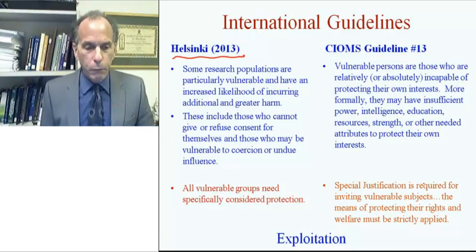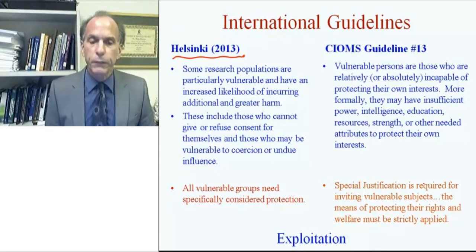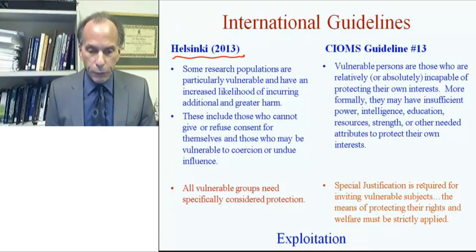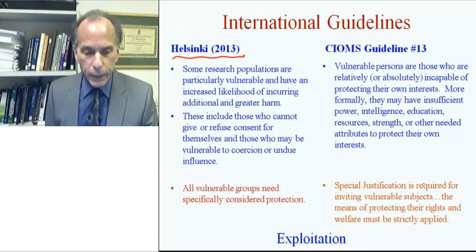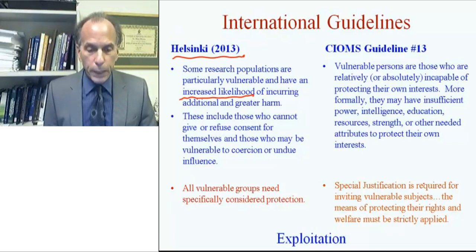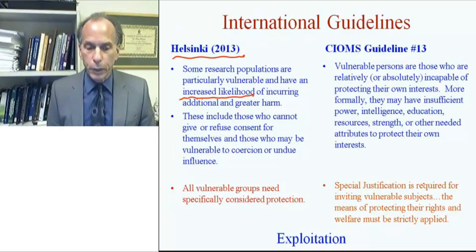Looking at Helsinki, we have this definition of vulnerability: some research populations are particularly vulnerable and have an increased likelihood of incurring additional and greater harm. I'd like to emphasize 'increased likelihood' — I'll get back to this in a few minutes. They give examples of those who might be vulnerable, including those who cannot give or refuse consent for themselves, and those who may be vulnerable to coercion or undue influence.